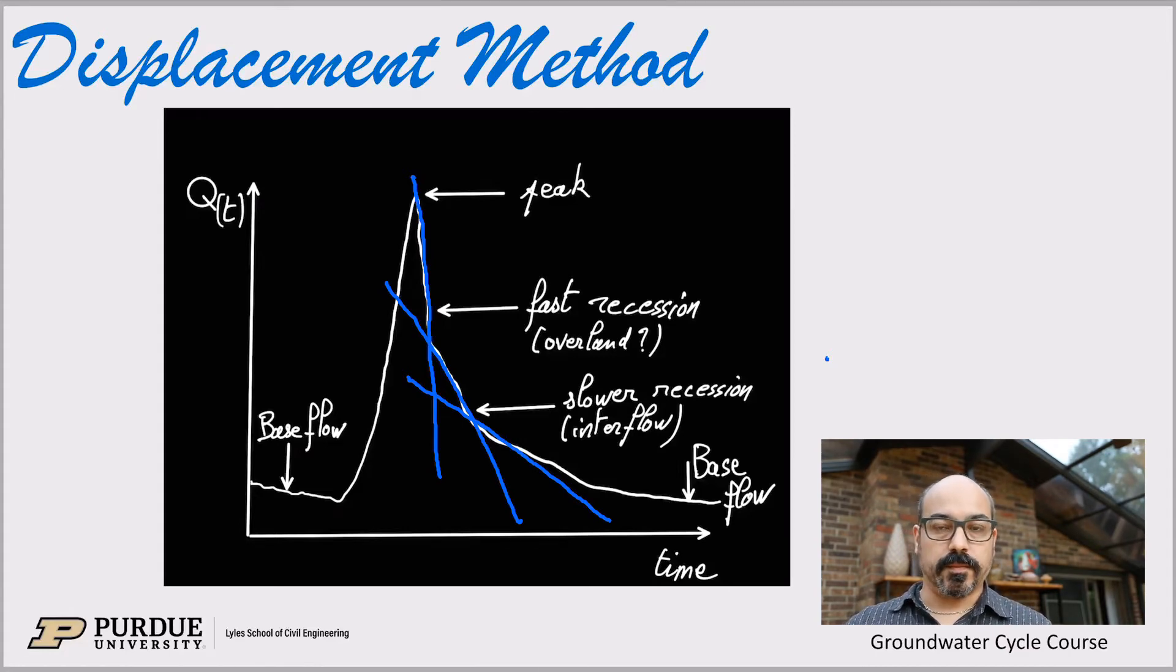Basically you can see like those runoff on the surface of the land and that goes to the river very fast. So this is a fast recession that can be linked to over land flow.